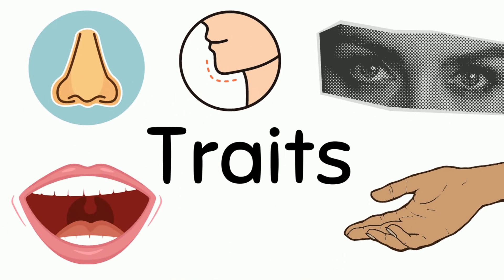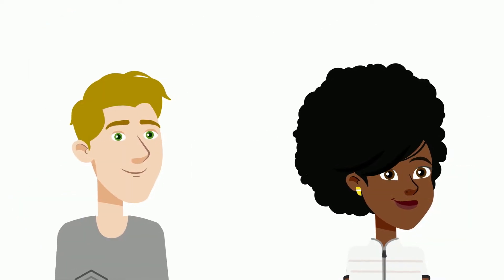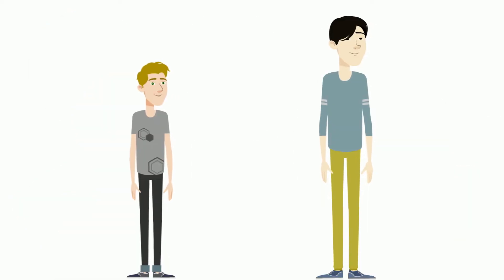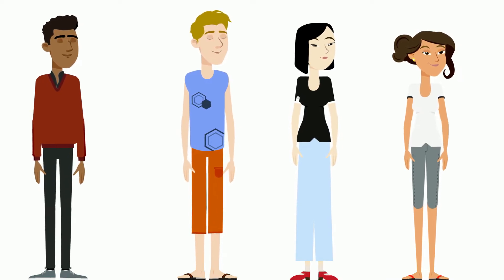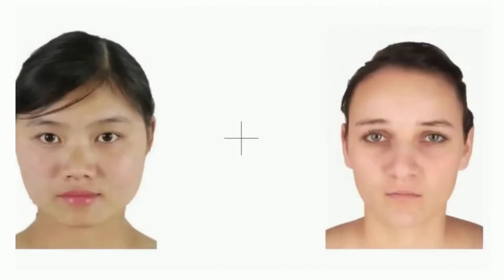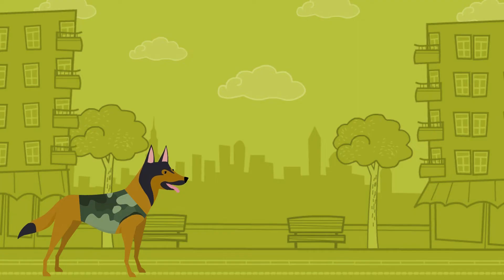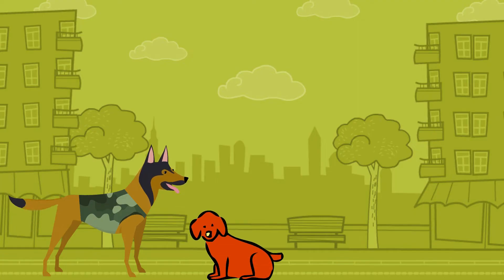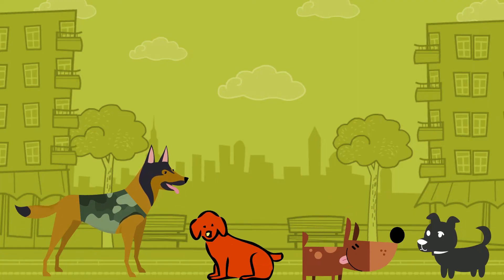Some examples include hair color, how tall you are, skin color, gender, or even the shape of your nose. With dogs it could be long tails versus short tails or long ears versus short ears.